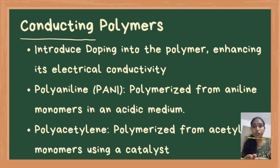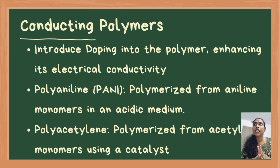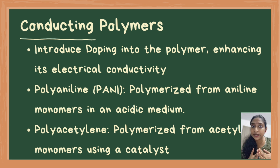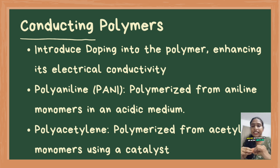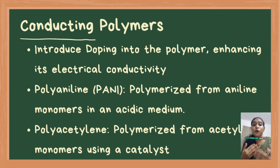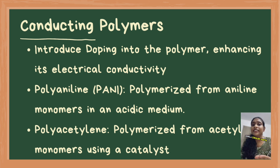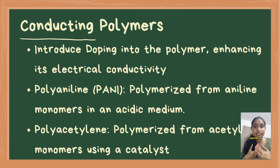Coming to conducting polymers: conducting polymers are a unique class of polymers that exhibit electrical conductivity achieved through a process known as doping. Doping introduces charge carriers like electrons or holes into the polymer, enhancing its conductivity. Polyaniline is a notable example, synthesized from aniline monomers in an acidic medium. It can exist in various oxidation states, with the emeraldine salt form being the most conductive. Polyaniline is used in anti-static coatings, sensors, batteries and corrosion protection. Polyacetylene, another conducting polymer, is synthesized from acetylene monomers using a Ziegler-Natta catalyst. It has a linear structure with alternating single and double bonds and is employed in electronic devices, sensors and conductive coatings due to its enhanced conductivity when doped.